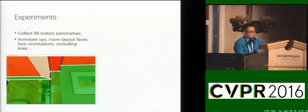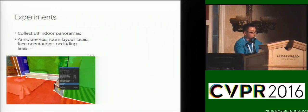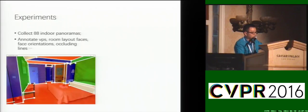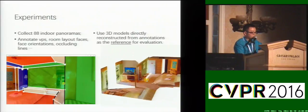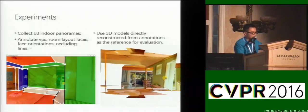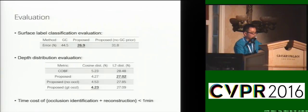We collected 88 indoor panoramas with manual annotations of the vanishing points, room layout faces, face orientations, occluding lines, and so on. The bottom left shows our GUI tool for annotation. For each panorama in the dataset, we directly reconstructed a 3D model based on its annotation, and used this model as a ground truth reference for evaluation. The method is evaluated in two aspects: surface-level classification, where our approach outperforms geometric contexts; and depth distribution evaluation, where our method also outperforms the simple cuboid model. The total time cost of occlusion identification and reconstruction is within one minute for all panoramas in our dataset.